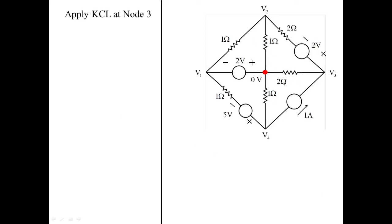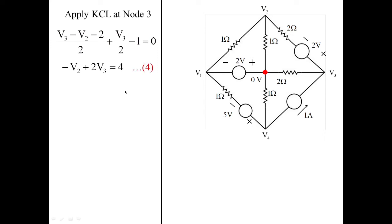Applying KCL at node 3, which also has three branches: (V3 − V2 − 2) / 2 as the first branch current; V3 / 2 between node 3 and the reference; and the current source delivering into node 3 is taken as minus 1 ampere directly from the circuit. This becomes equation 4. From equations 3 and 4 we can solve for V2 and V3.